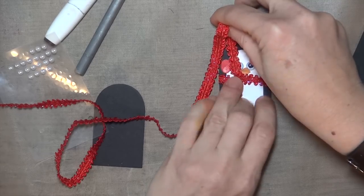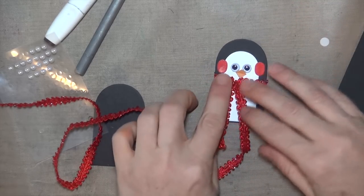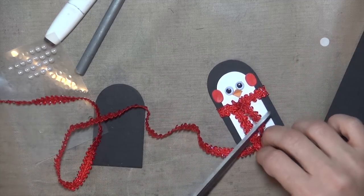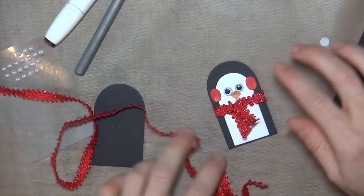I gave my little penguin a scarf using some decorative trim, ribbon would be great too, and that's tied around the back, and I just used a simple single knot, then glued it so it would stay down.